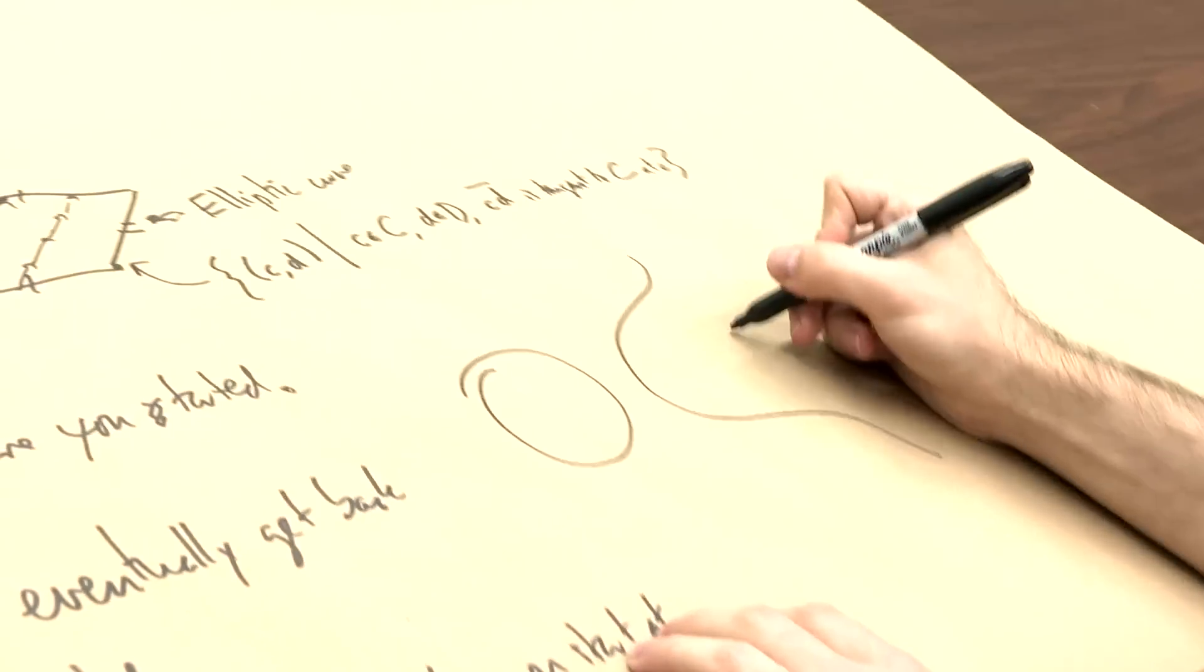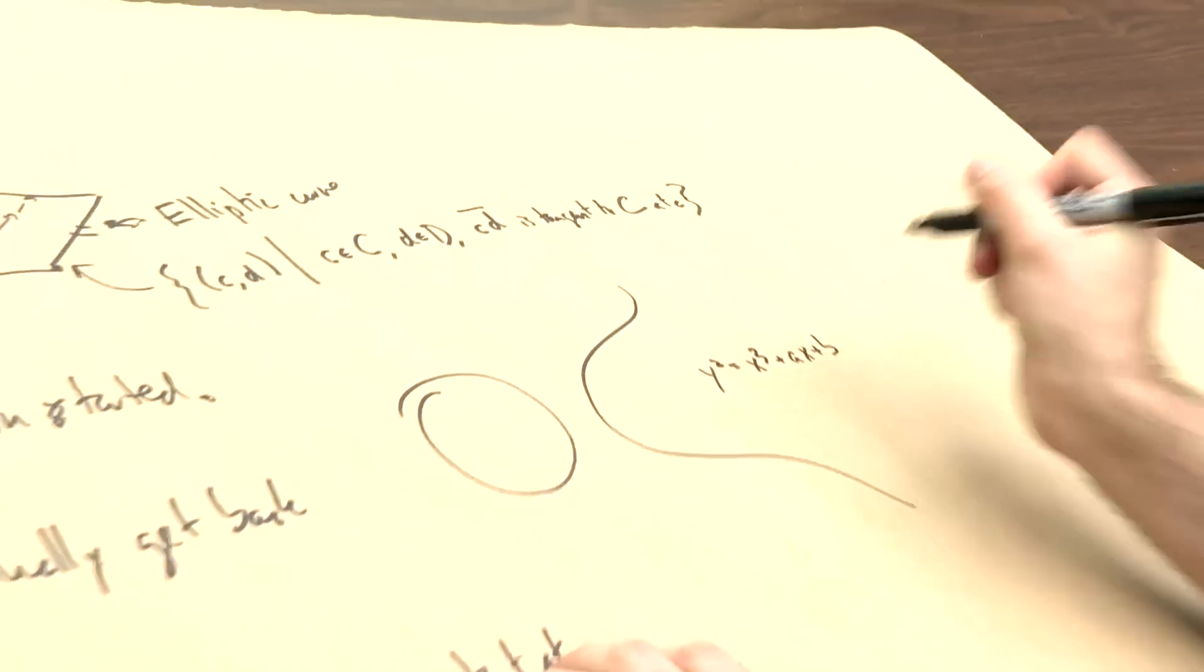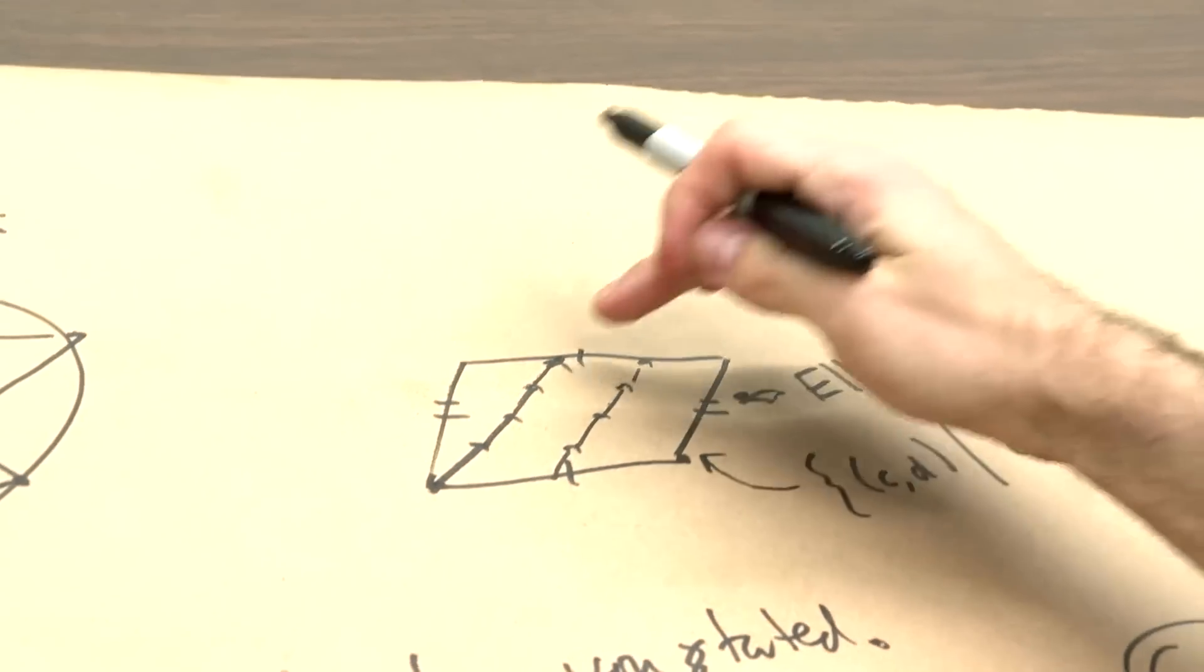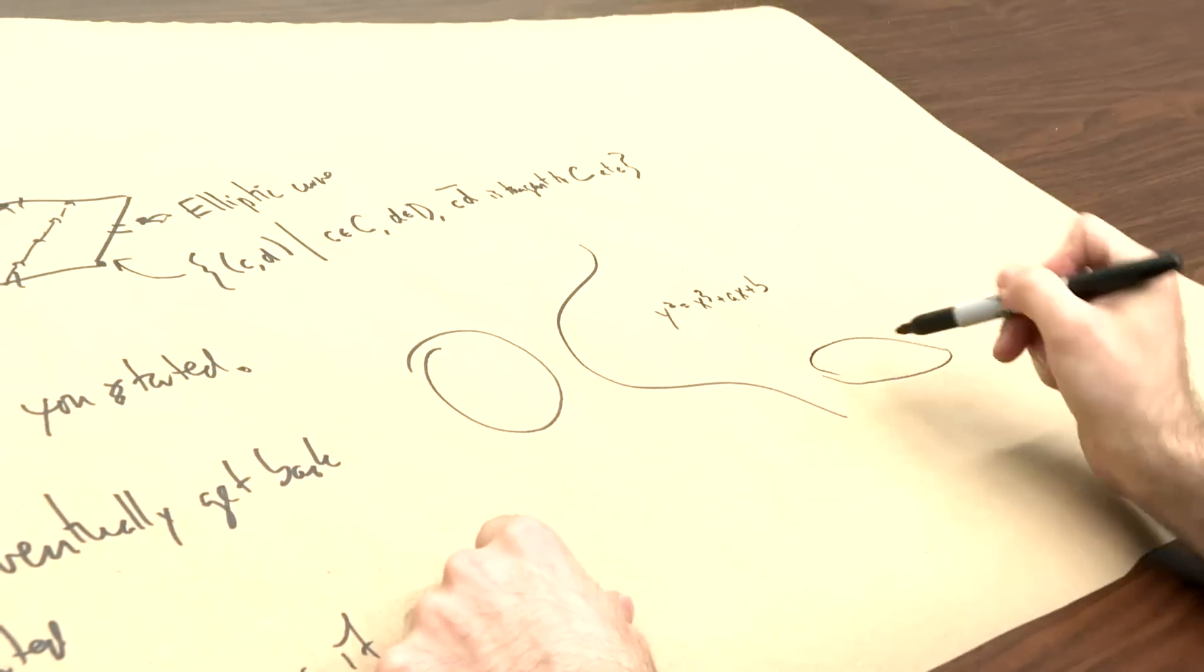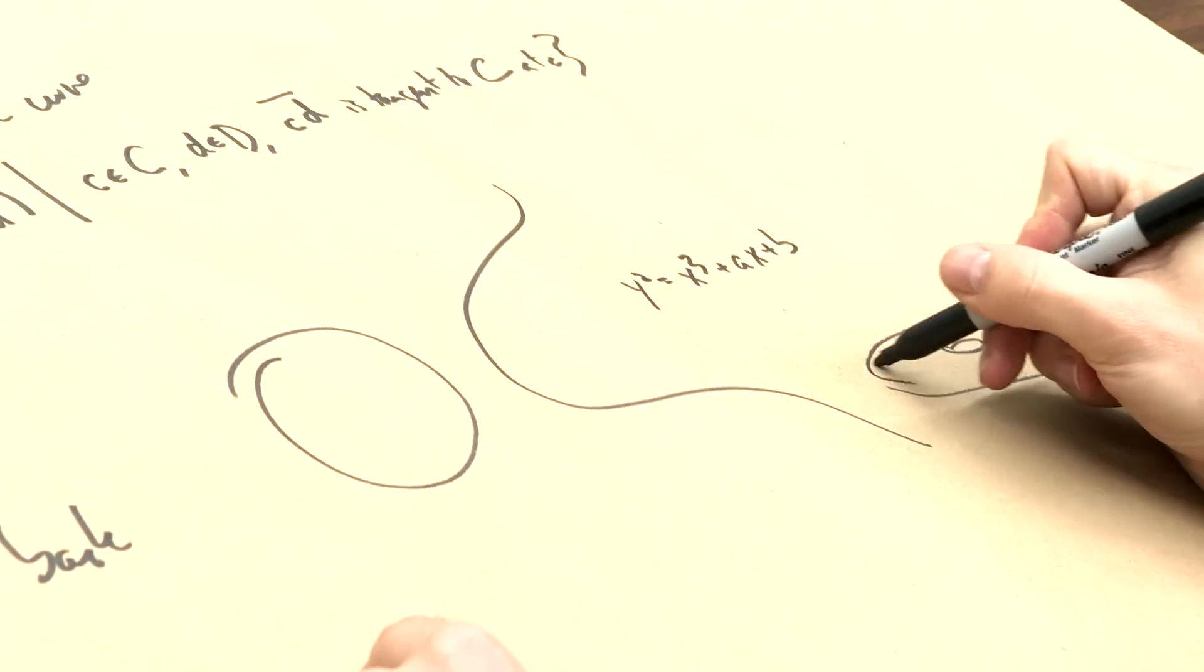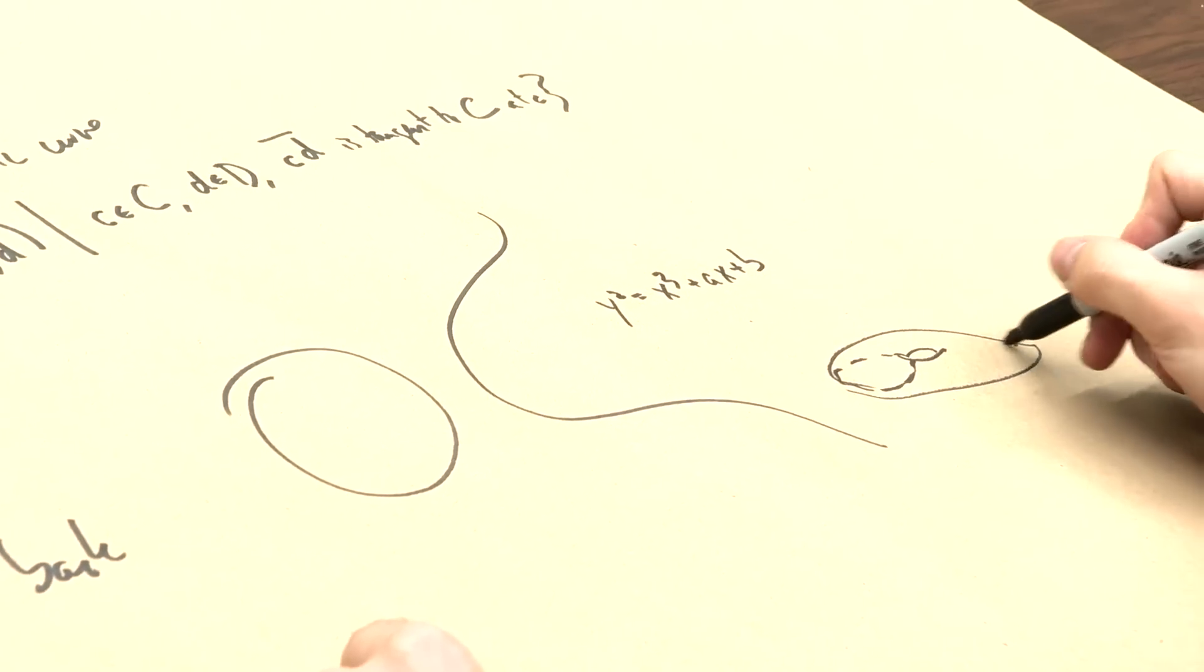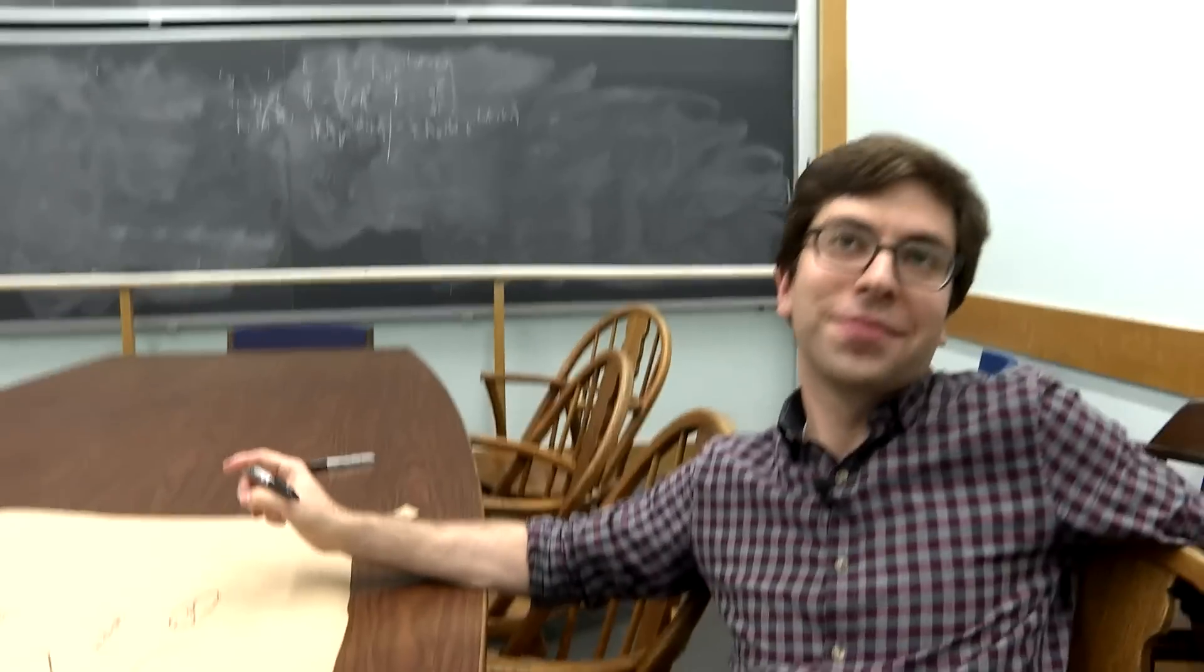So an elliptic curve people often draw is looking at something like this. So that's the real solutions to an equation that looks like this. But if instead you look at the complex solutions, you've got a picture like this. So in fact this is, if you think about gluing this side to this side and this side to this side, you get a doughnut. And watch this picture as well. This loop goes over here and this one is kind of some shadow of a loop over here.